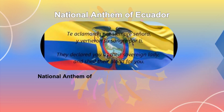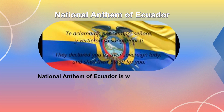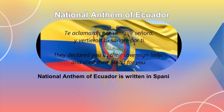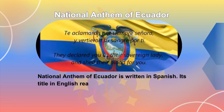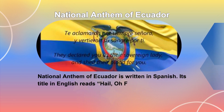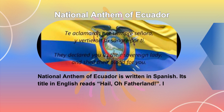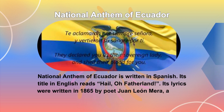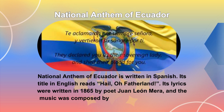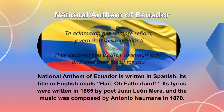The National Anthem of Ecuador is written in Spanish. Its title in English reads 'Hail, O Fatherland.' Its lyrics were written in 1865 by poet Juan Leon Mera, and the music was composed by Antonio Neumann in 1870.